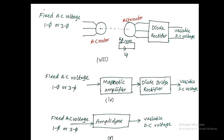We can use any one of these methods to get variable DC voltage. We will look at economical aspects, size, cost, and efficiency, and choose the proper AC to DC converter accordingly.